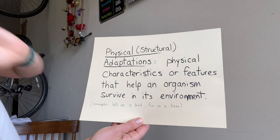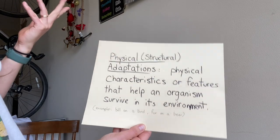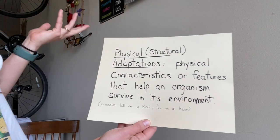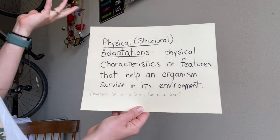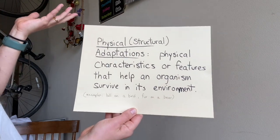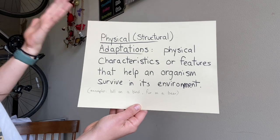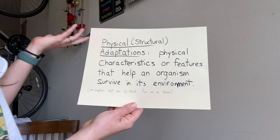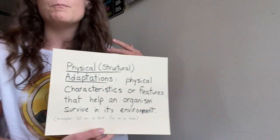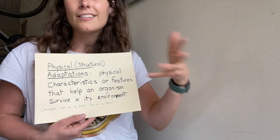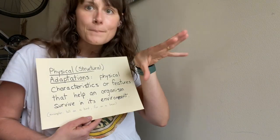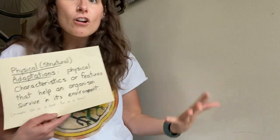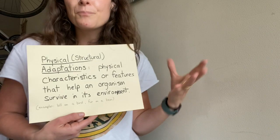Structural or physical adaptations are characteristics — physical characteristics are features that help an organism survive in its environment. For example, that could be like the beak or the bill on a bird, the fur on a bear, things like that.